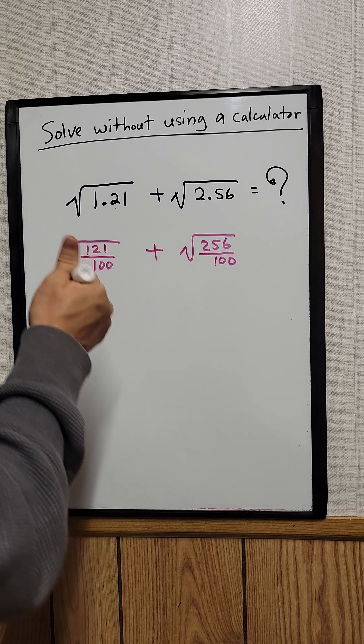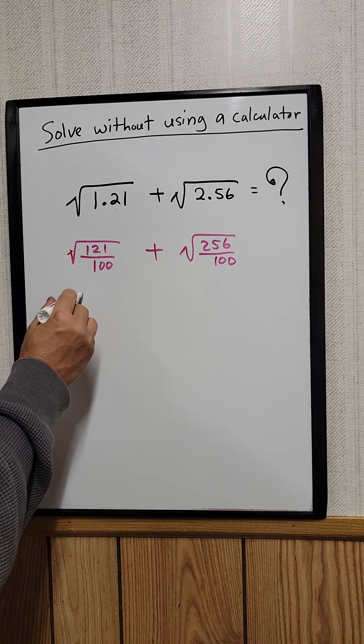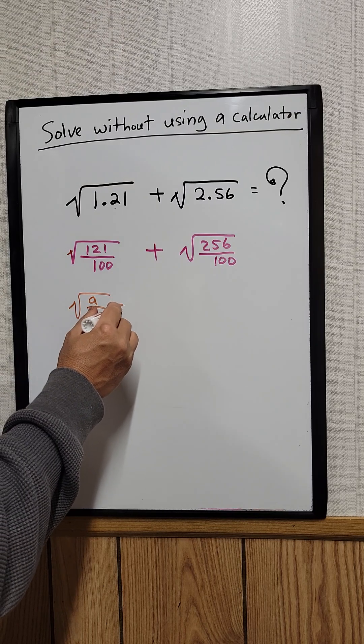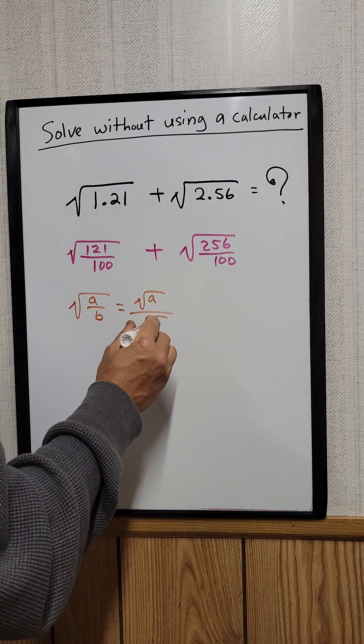There's a law exponent that stated that if you have the square root of a divided by b, that's just equal to the square root of a divided by the square root of b.